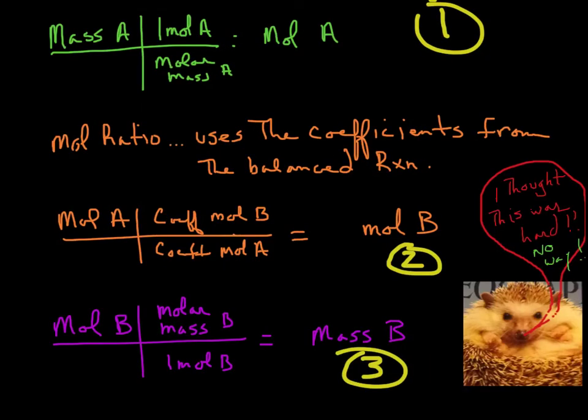Well, the first calculation - again, if I'm in grams and I want to go to moles, you divide by the molar mass. And the molar mass is given to you by the periodic table, and that's something we know how to do.